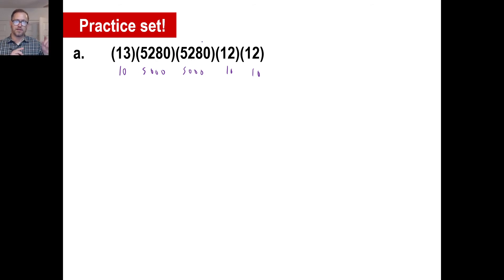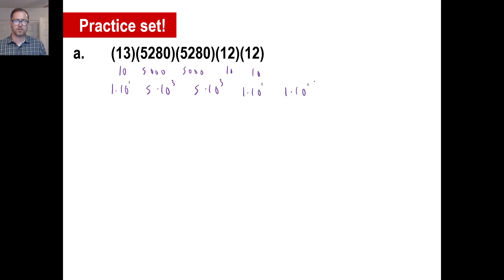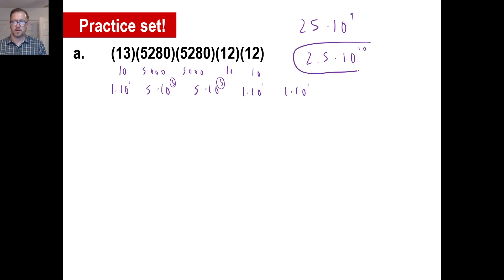If you kind of went back and forth and did down one and up one, it'd be a little more close to the actual answer. So this is 1 times 10 to the first power, 5 times 10 to the third power, 5 times 10 to the third power, 1 times 10 to the first, 1 times 10 to the first. We're multiplying all of it together, that'll be 25. The only question is 10 to the what power? 1 plus 3 is 4, plus 3 is 7, 8, 9. Move that over one — it'll be 2.5 times 10 to the 10th power — a low-ball estimate, but close enough.